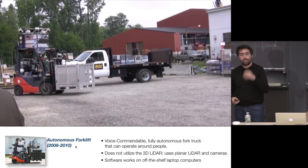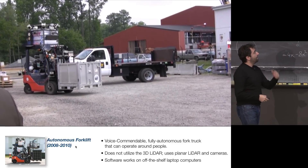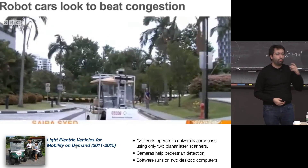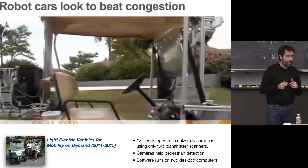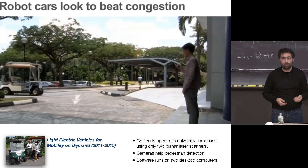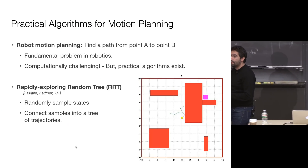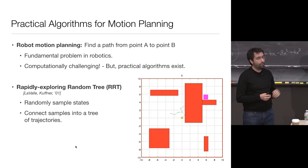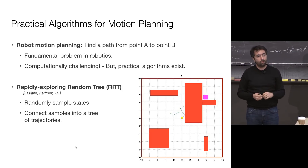I spent a couple of years doing this type of project that really shaped my PhD thesis. Later when I started as faculty, I worked on a number of things — we built autonomous golf carts in Singapore's NUS campus for mobility on demand. Throughout these projects, I focused mainly on motion planning. The one algorithm I was working on was called Rapidly Exploring Random Tree.